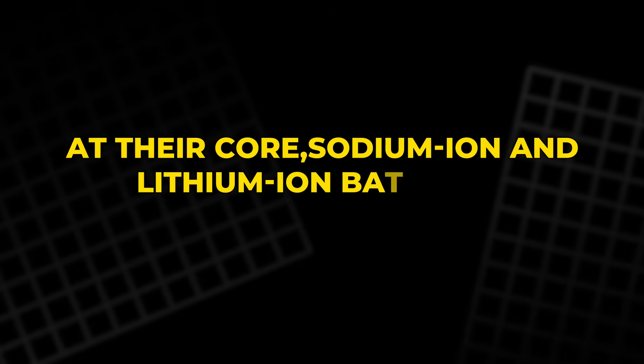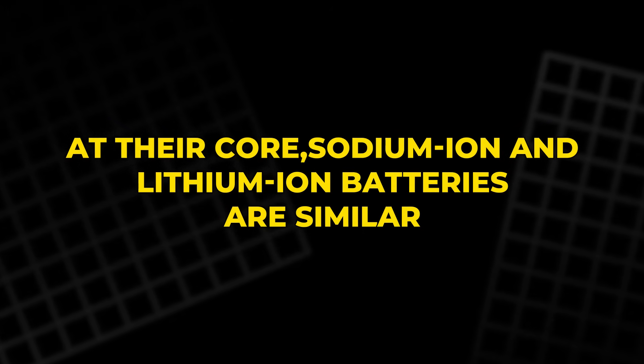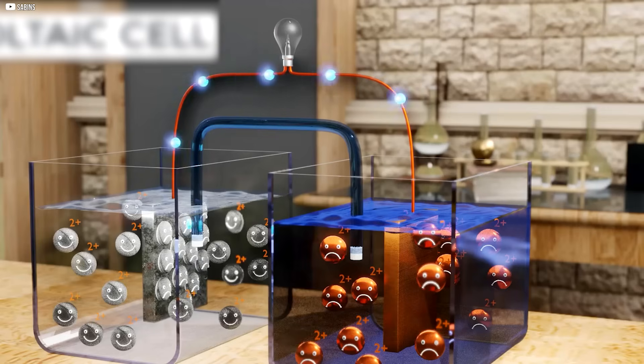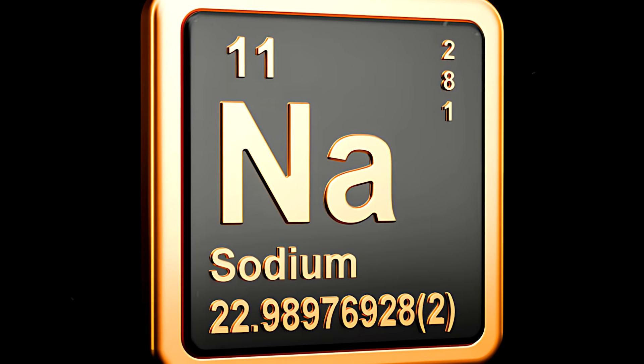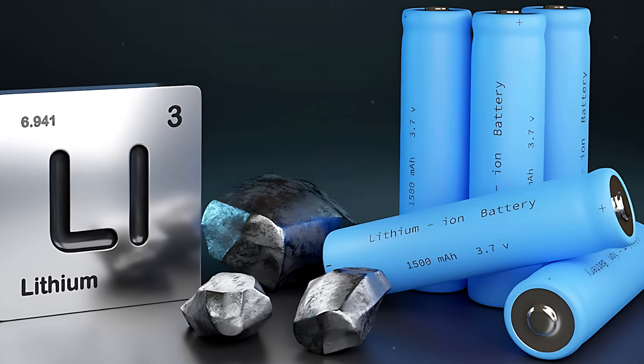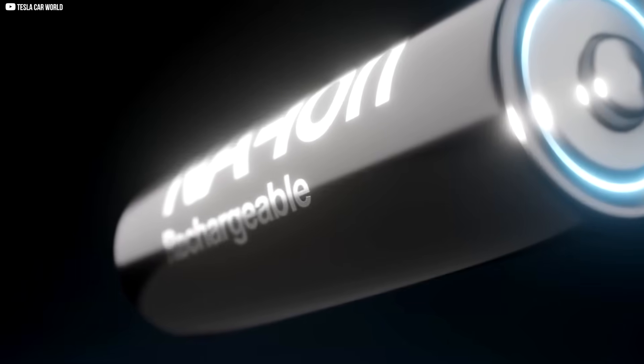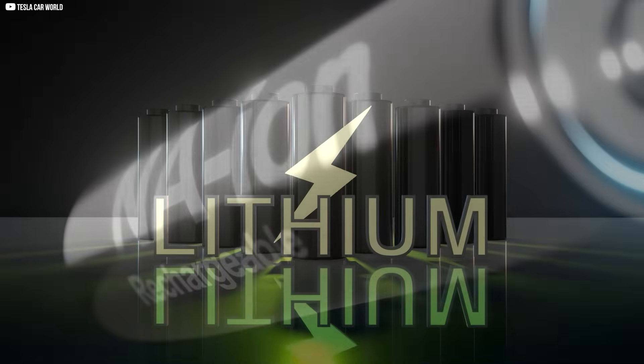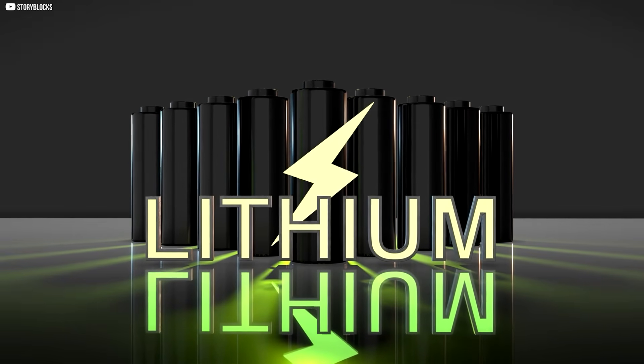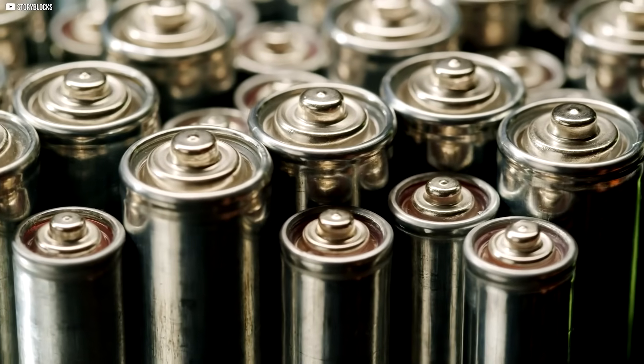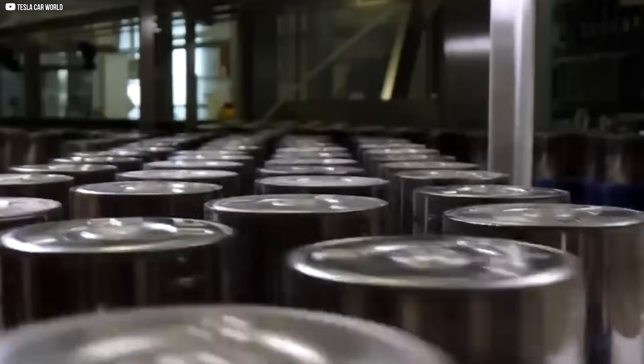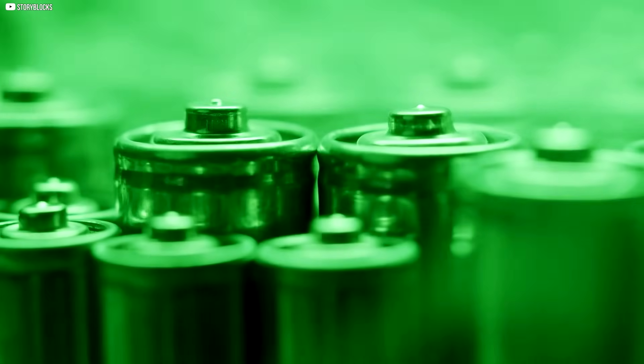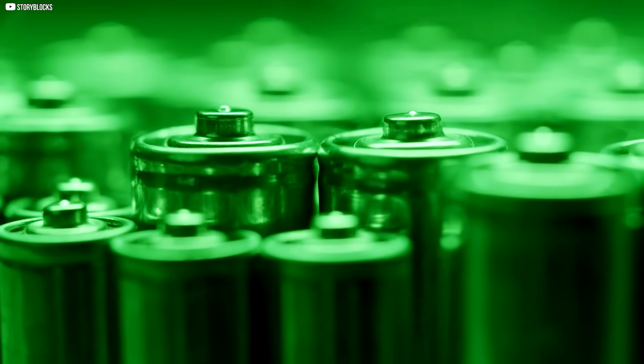At their core, sodium-ion and lithium-ion batteries are similar. Both rely on the movement of ions between two electrodes to generate electricity. The difference lies in the ions themselves: sodium for sodium-ion batteries and lithium for lithium-ion batteries. Sodium-ion batteries use sodium as the charge carrier, while lithium-ion batteries use lithium. The challenge with sodium is that its larger ion size and lower energy density make it less efficient than lithium-ion in terms of storing energy. This means that sodium-ion batteries tend to be bulkier and heavier for the same energy output.